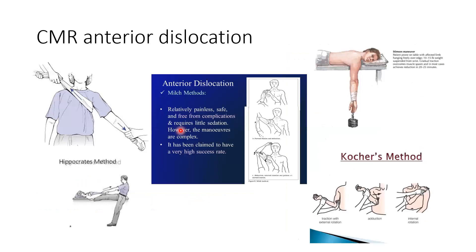There are many methods for CMR or closed reduction of anterior dislocation: traction-countertraction method, Hippocrates method, Stimson method — prone with weights, and the Kocher method — falling out of favor because of high risk of fracturing the glenoid. The Milch method has a very high success rate and low complication rate, though it can be complex. The maneuver involves axial traction, stabilizing the humeral head with the thumb, then abducting and forward flexing until the humeral head falls back into place.